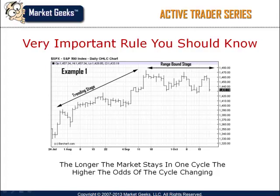There are exceptions to this rule, but typically when you see a long trend that lasts for several months, you almost always see a trendless consolidation period immediately following the end of the trending cycle. Similarly, when markets are range-bound for extended periods of time, a strong breakout accompanied by volatility and momentum typically follows this pattern.